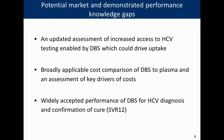There are potential market and demonstrated performance knowledge gaps that still need to be addressed as challenges to wide-scale DBS implementation for HCV. An updated assessment of the increased access to HCV testing that DBS would enable could help drive uptake. While there is some evidence that DBS can be less expensive than plasma — due to cost of goods and lack of cold chain — a broadly applicable cost comparison and assessment of key cost drivers would be valuable. Finally, a widely accepted performance standard for DBS in HCV diagnosis and confirmation of cure (SVR-12) is needed, which will be enabled by a soon-to-be-published FIND report on global DBS performance.